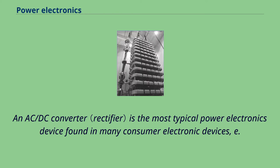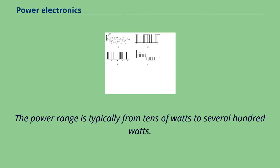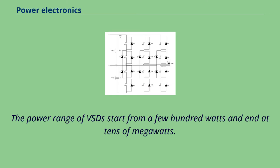An AC-DC converter is the most typical power electronics device found in many consumer electronic devices, such as television sets, personal computers, battery chargers, etc. The power ranges typically from tens of watts to several hundred watts. In industry, a common application is the variable speed drive used to control an induction motor. The power range of VSDs starts from a few hundred watts and ends at tens of megawatts.